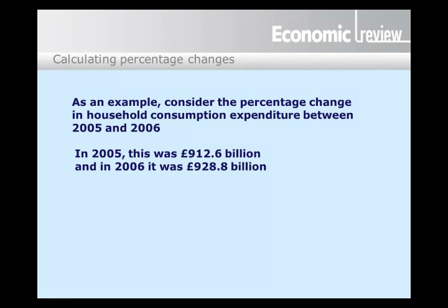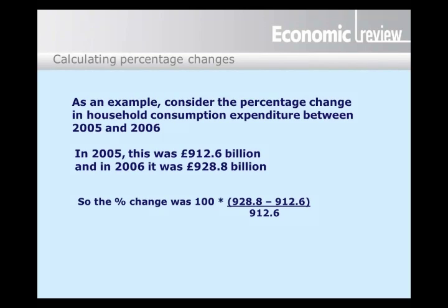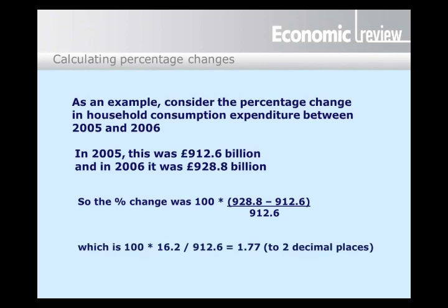How do we calculate the percentage change from 2005 to 2006? The formula is simply this: percentage change equals 100 multiplied by the change — 928.8 minus 912.6 — divided by the amount of consumption in the base period, 912.6. Notice we can ignore the billions here, and notice that when you calculate a percentage change, you always do so relative to the starting position and not the final position. This calculation works out as 100 multiplied by 16.2 divided by 912.6, which is 1.77%, rounded to two decimal places.